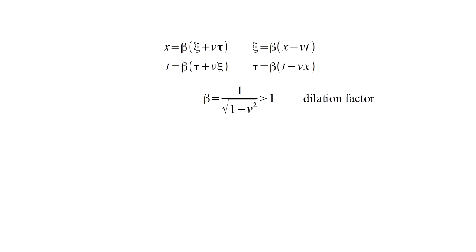Moreover, the coordinate transformations contain a dilation factor beta. To be specific, we'll assume a velocity of three-fifths the speed of light, which gives a dilation factor of five-fourths. If we naively consider only the time coordinates, this implies that if I measure a time interval delta tau, you measure a time interval delta t that is larger than what I measure by a factor of five-fourths.